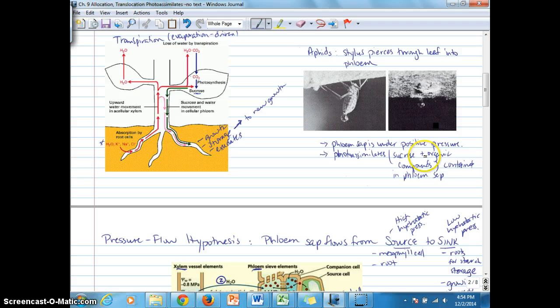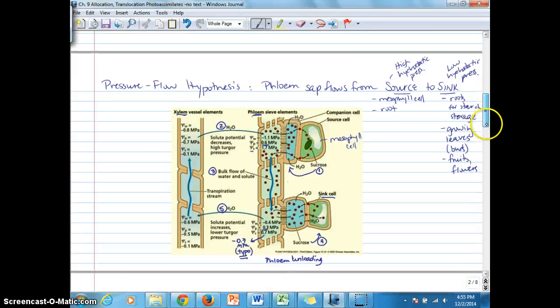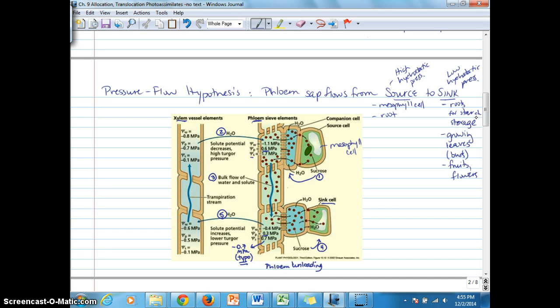Chapter 9 goes into detail about other components of phloem sap, but we're concentrating on the photo assimilates, the sucrose. Then we move into how phloem sap moves through the phloem by the pressure flow hypothesis. The driver is hydrostatic pressure gradient.